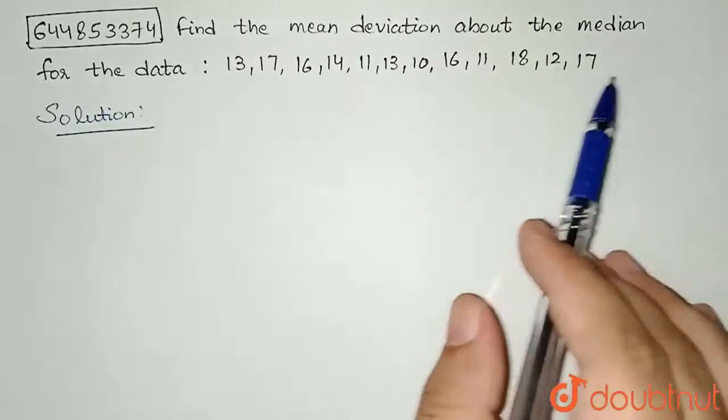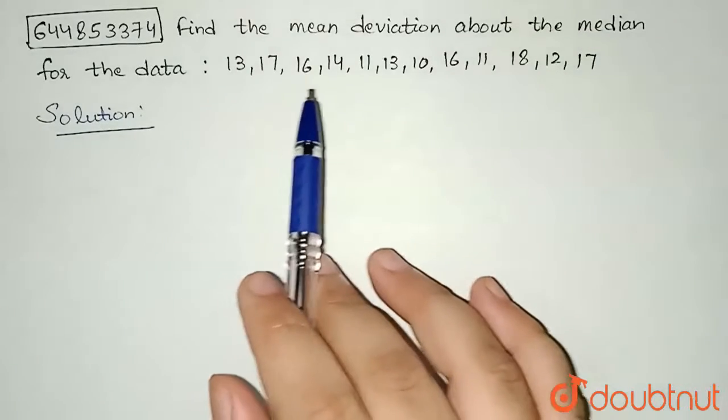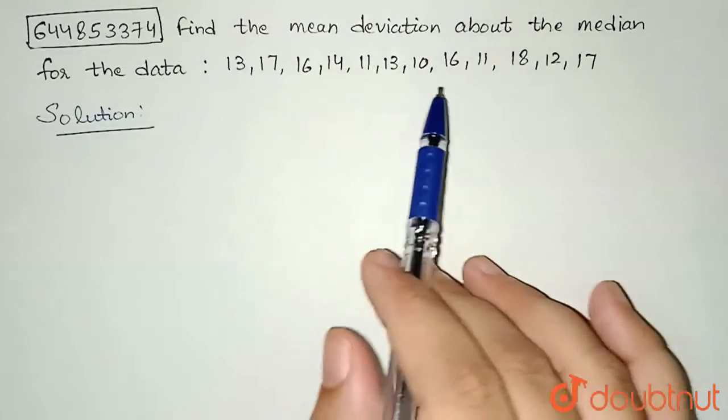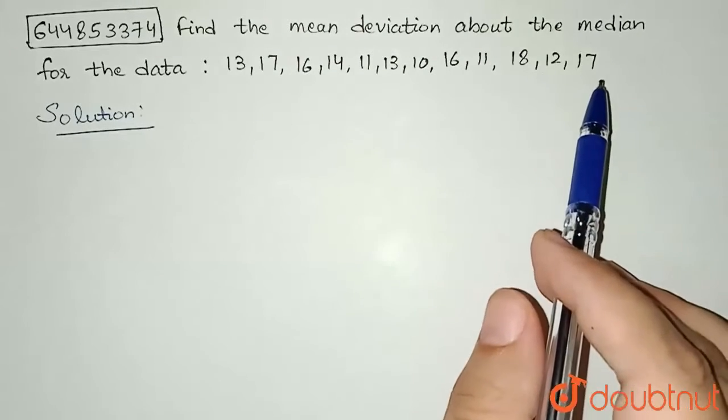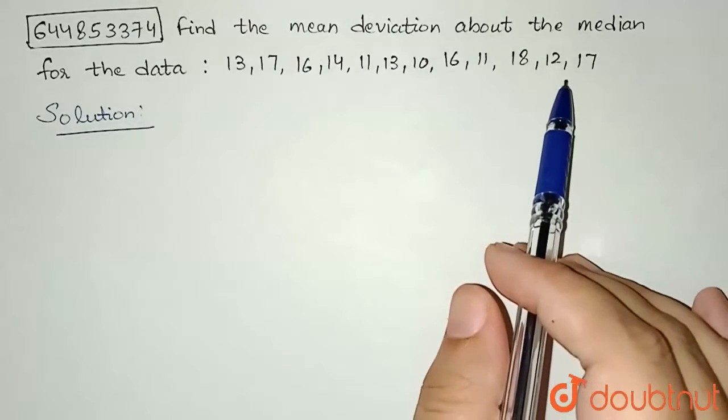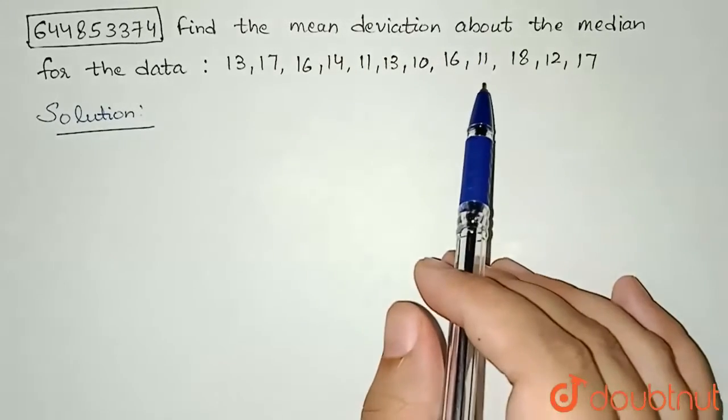Hello everyone, the question is: find the mean deviation about the median for the data 13, 17, 16, 14, 11, 13, 10, 16, 11, 18, 12, and 17. So we are given this data and we need to find the mean deviation about median for this data.